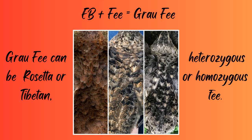Now let's talk about Grau-Fi. When you have the EB gene plus the Phi gene, you have Grau-Fi. Grau-Fi can be either Rosetta or Tibetan, and it can be heterozygous or homozygous Phi. The Phi gene removes shades of orange and brown. With one copy of the gene you still have a little bit of brown left, but with two copies of the Phi gene it tends to be a black and white bird.